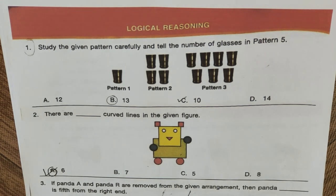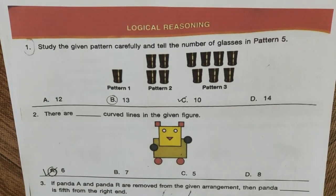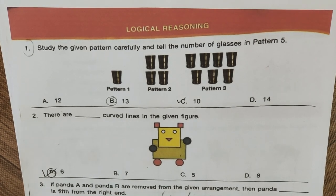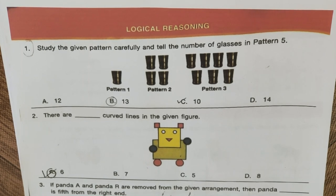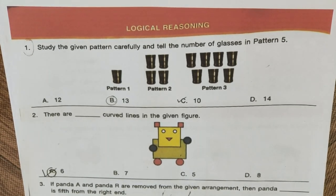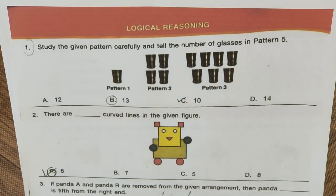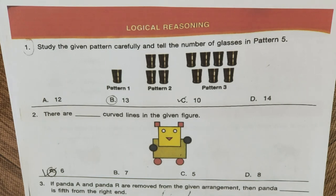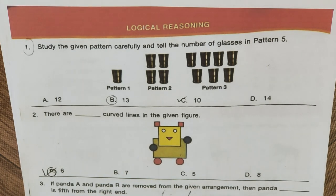Hello everybody and welcome back to our YouTube channel. Today we are going to solve the NSO — National Science Olympiad — test paper for Class 2, Set A. Some parts of the paper have already been solved by students who wrote on it by mistake. I will use sketch pens so you can distinguish correct answers from incorrect ones. Please follow only those answers marked with sketch pens.